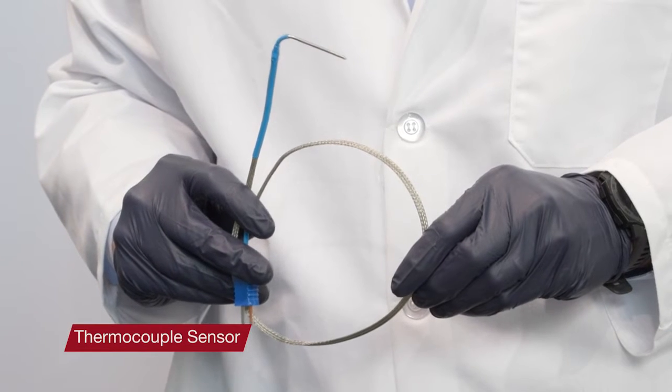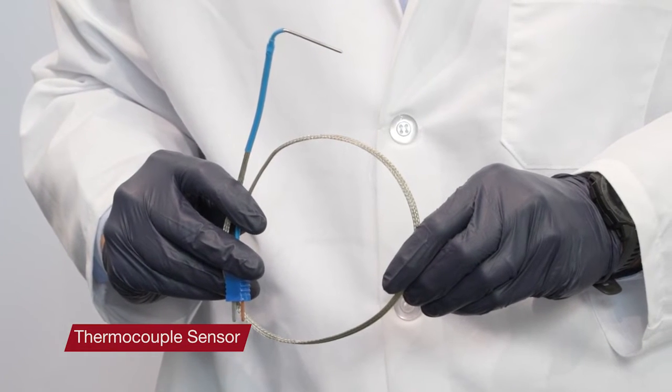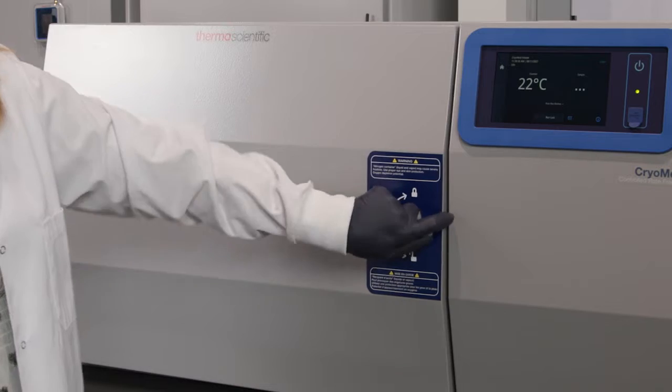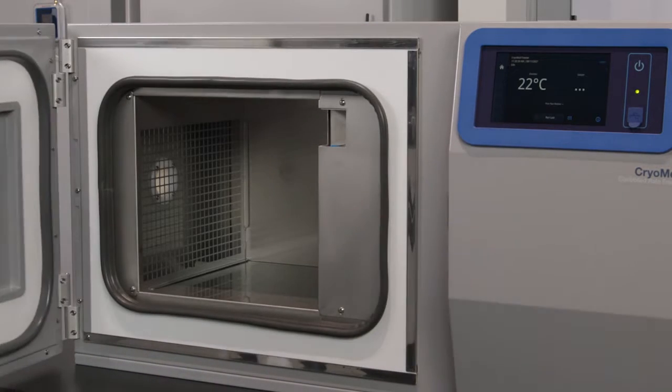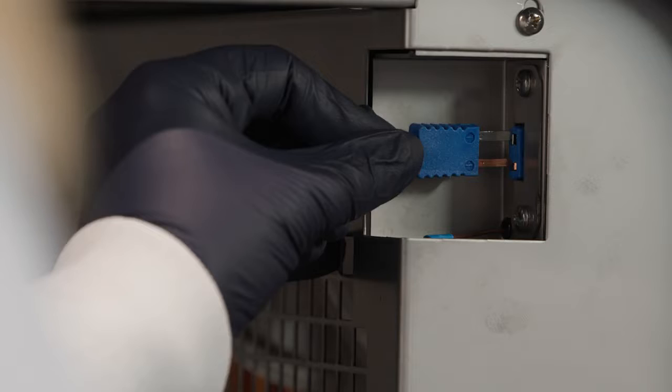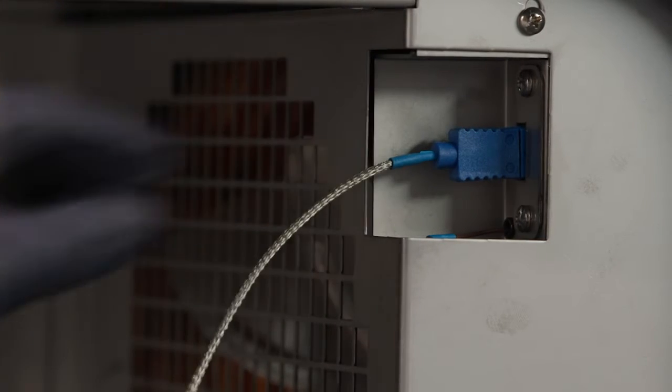Each of the Cryomed control rate freezers ships standard with a probe for use with vials. To install the probe in the Cryomed control rate freezer, simply open the unit door and install the vial probe as shown here.